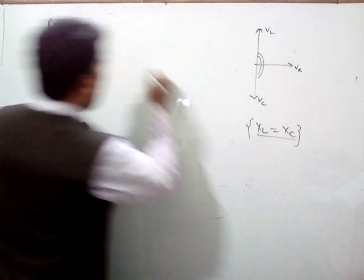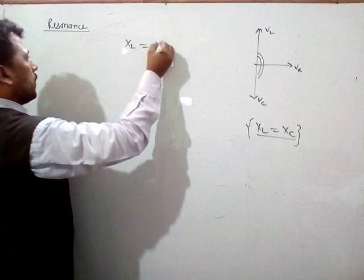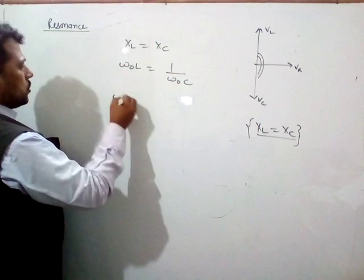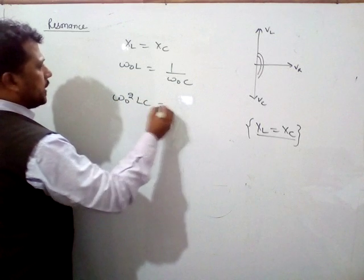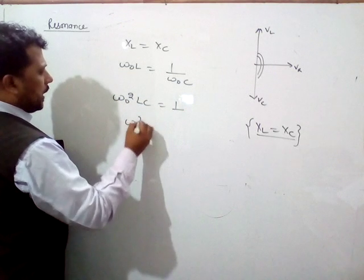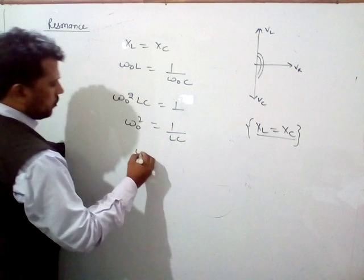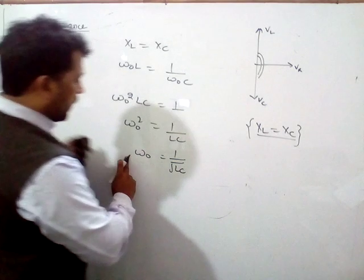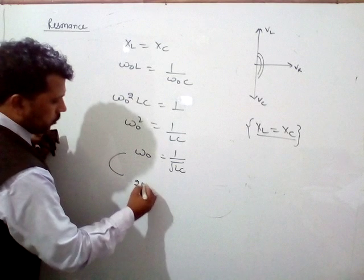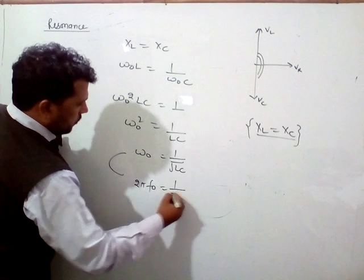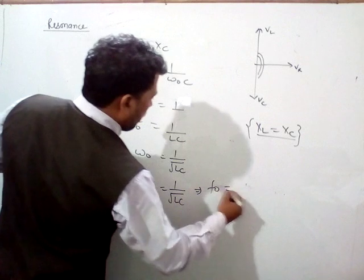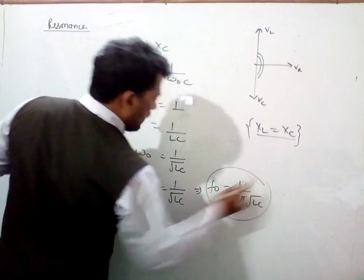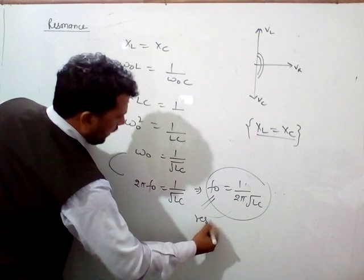For the resonance condition, XL equals XC, which gives us omega-zero times L equals 1 over omega-zero times C. Therefore, omega-zero squared times LC equals 1, so omega-zero squared equals 1 over LC, and omega-zero equals 1 over the square root of LC. This is the angular resonance frequency. Substituting 2πF₀ for omega-zero, the resonance frequency F₀ equals 1 over 2π times the square root of LC.